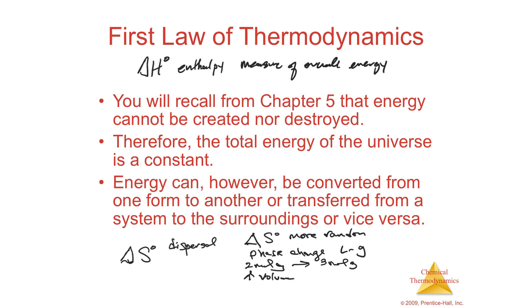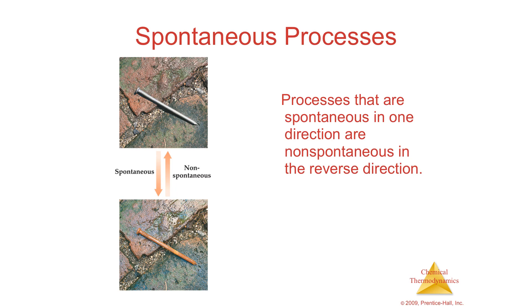Knowing enthalpy and entropy allows you to determine whether something is spontaneous. It is spontaneous when you have an increase in entropy and a decrease in enthalpy — more random at the end and lower energy at the end. It's spontaneous when you leave a nail out in wet conditions and it rusts. The reverse — a rusted nail going back to iron nail — is non-spontaneous.